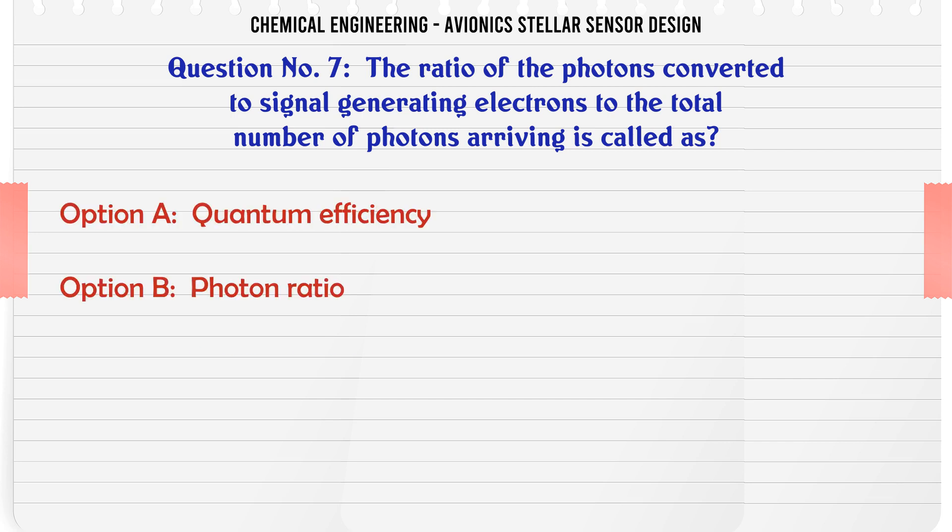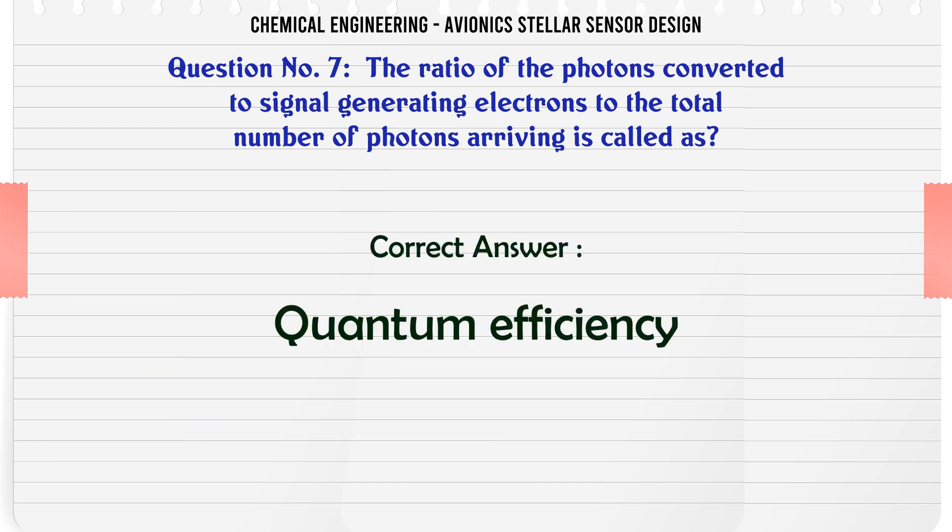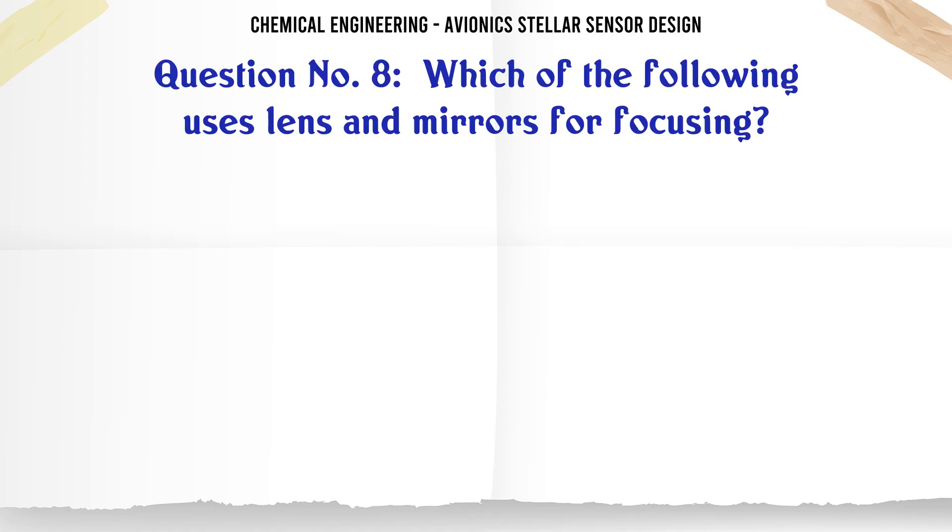The ratio of the photons converted to signal generating electrons to the total number of photons arriving is called: A. Quantum efficiency, B. Photon ratio, C. Conversion ratio, D. Photons to electron ratio. The correct answer is Quantum efficiency.